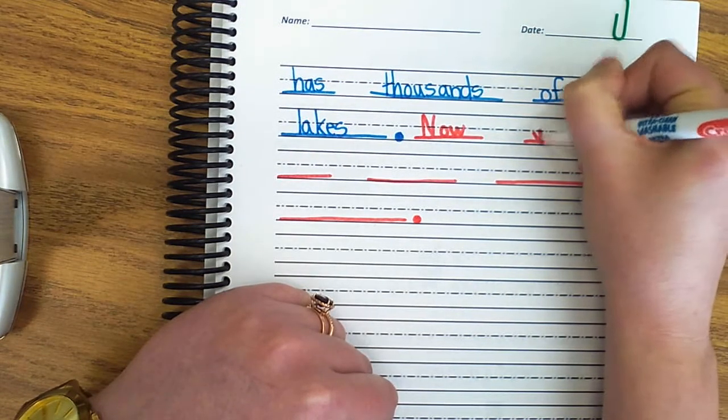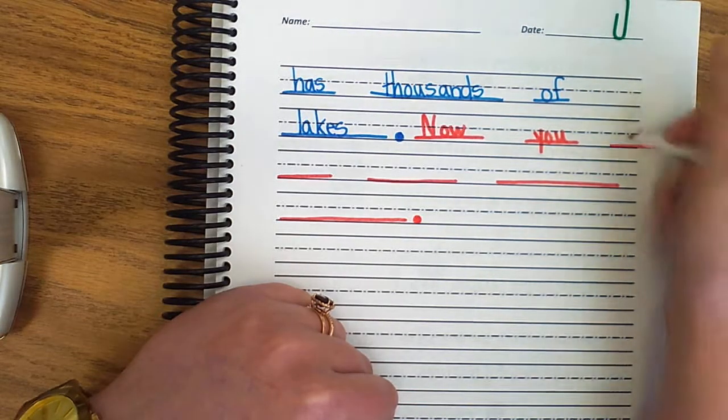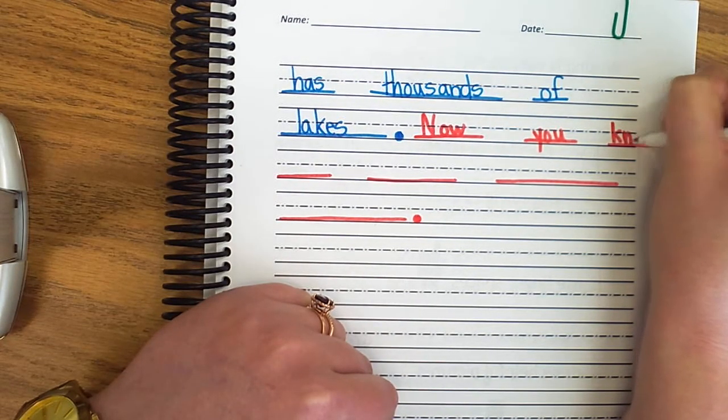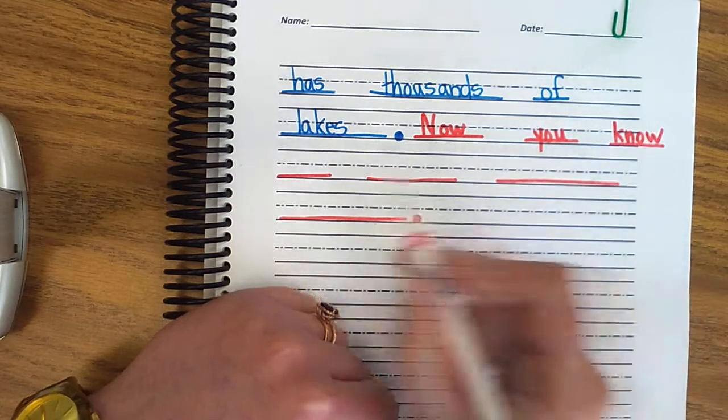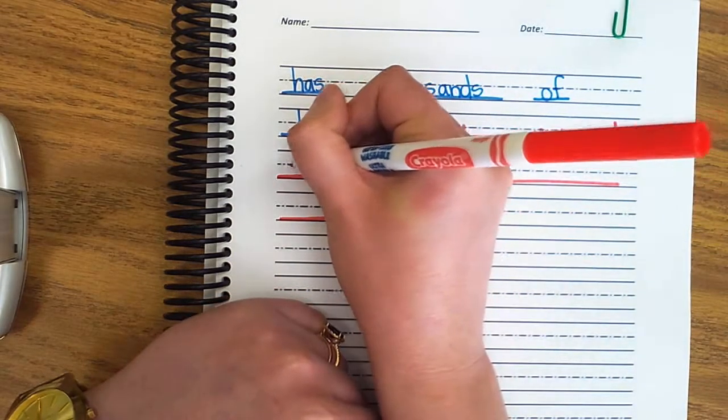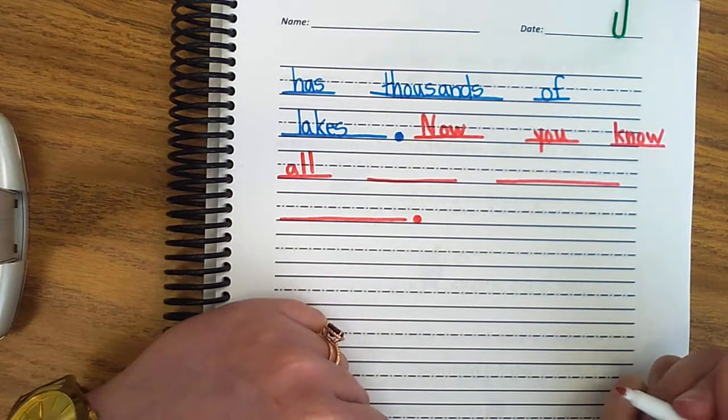Now, you, Y-O-U spells you. Know, K-N-O-W, comes from the word knowledge to know things. Now you know all about. All, A-L-L spells all.